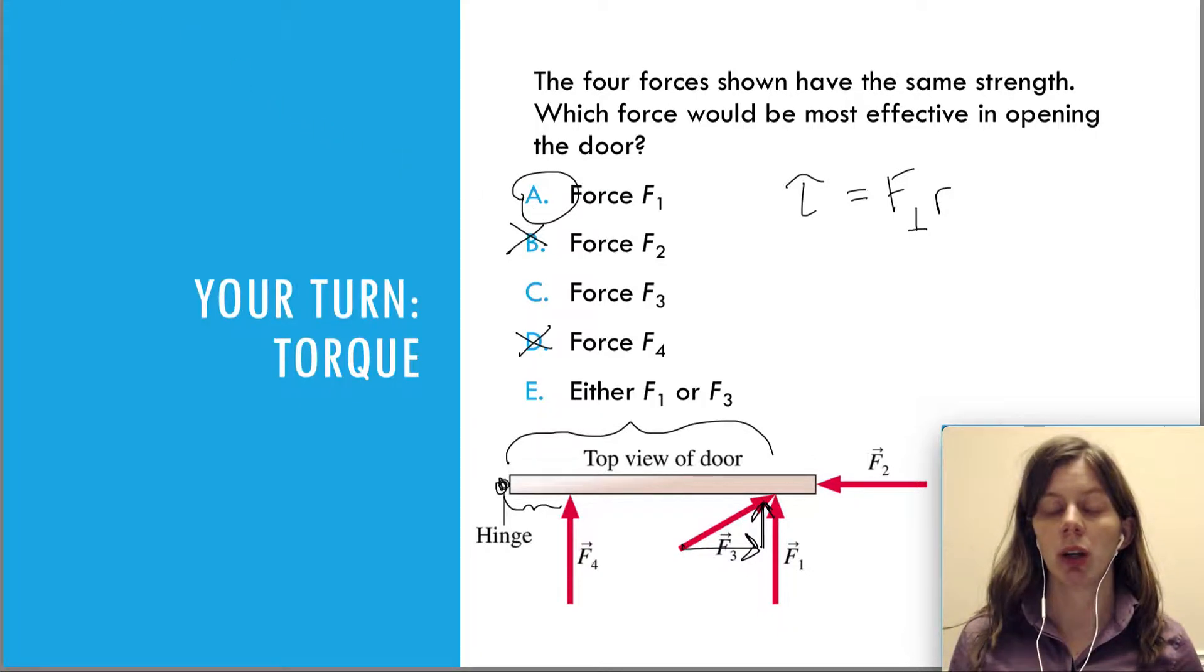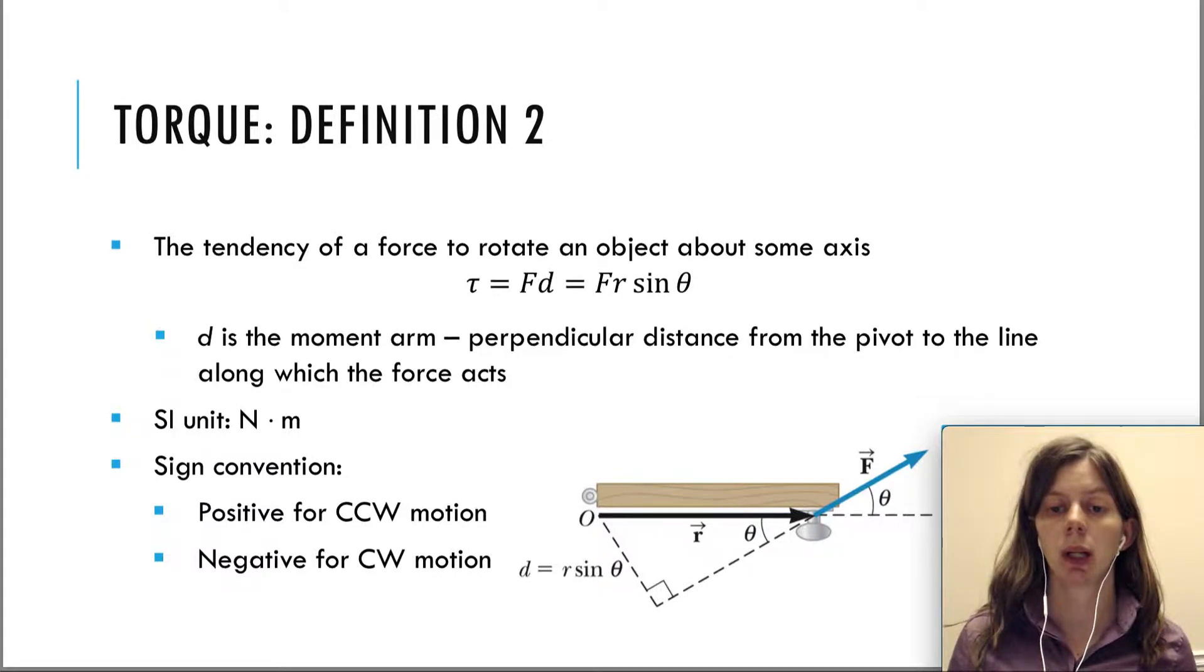So now we're ready to talk about our second definition of torque. This one is still the same definition, still a force causing rotation, but we're using a slightly different equation. Instead of using torque equals F perpendicular times R, we're going to use F times D. And D is called the moment arm. It's also called the lever arm. It's the perpendicular distance from the pivot to the line along which the force acts. So that's a lot to take in, but this picture really helps to understand. So D is right here. D is this distance right here.